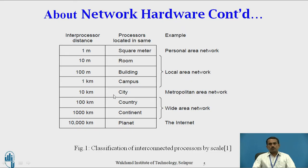At 10 kilometers, covering a city, that is a Metropolitan Area Network. At 100 kilometers, covering a country, and at 1,000 kilometers, covering a continent, it can be used in a Wide Area Network. At 10,000 kilometers, covering the planet, we use the Internet.